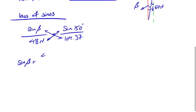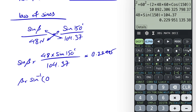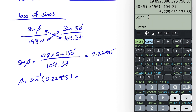Cross-multiplying gives us 48 times sine of 150 degrees divided by 104.37, which equals 0.22995. Taking the inverse sine of that value, angle beta equals 13.29 degrees.